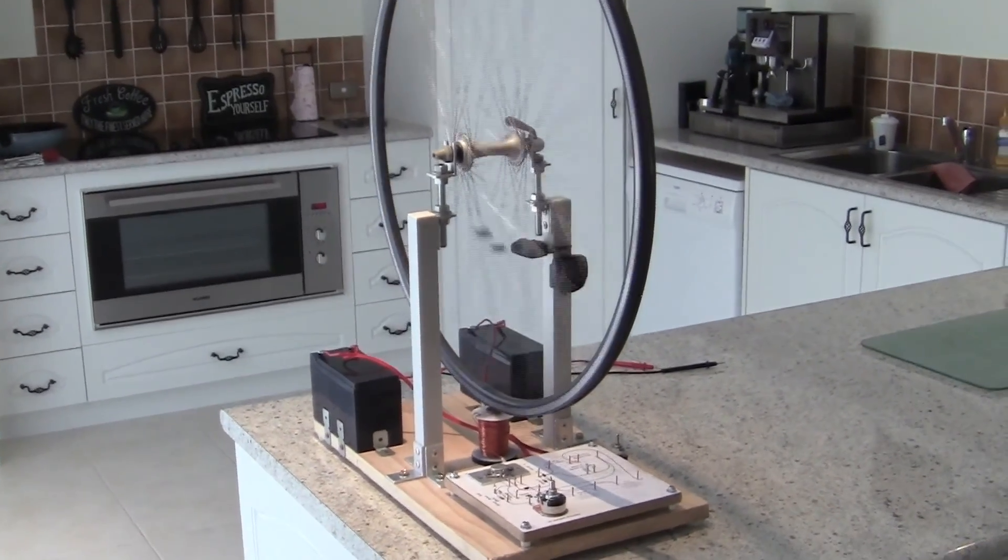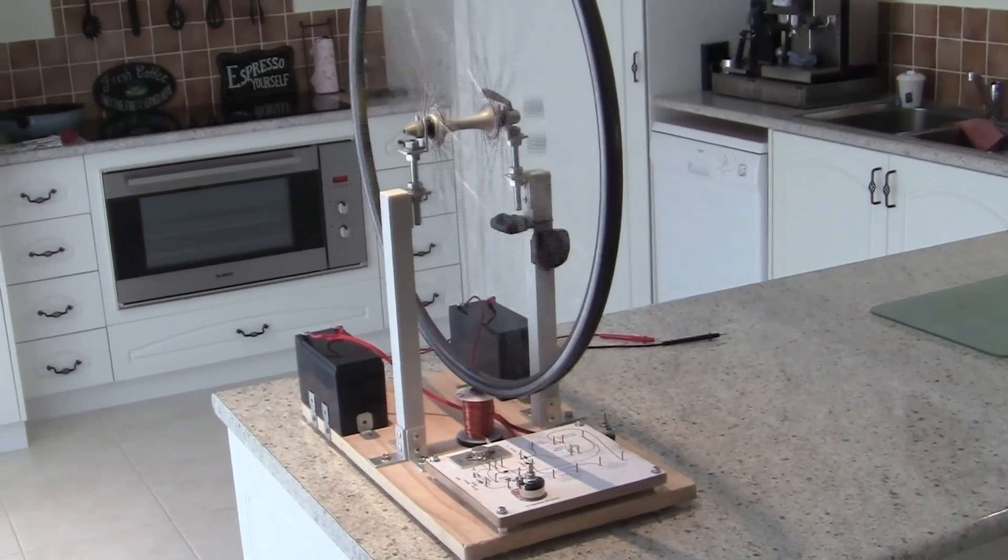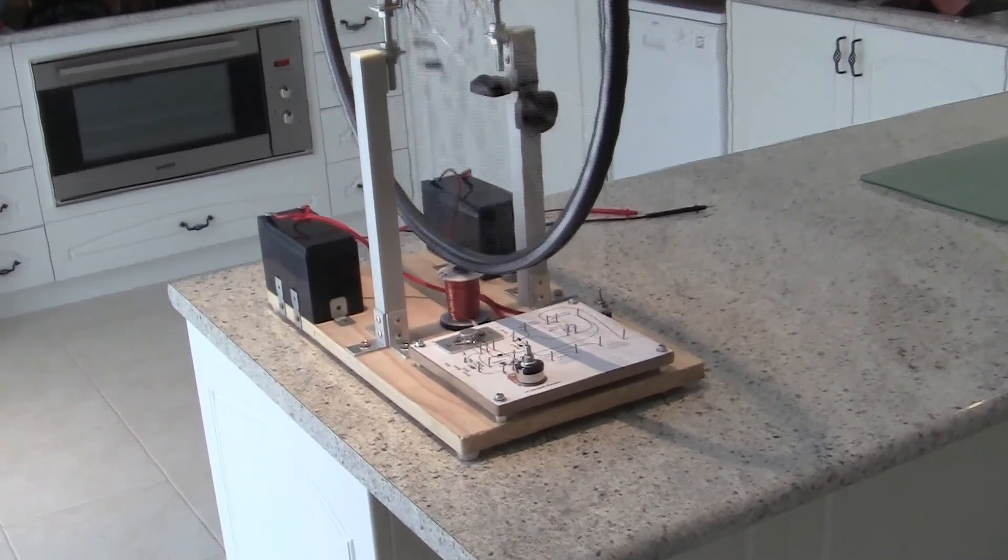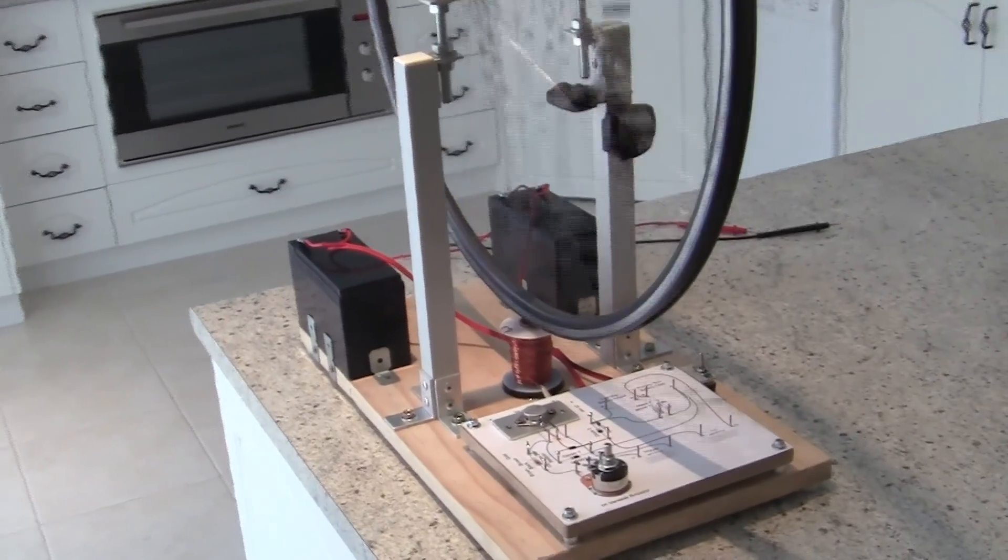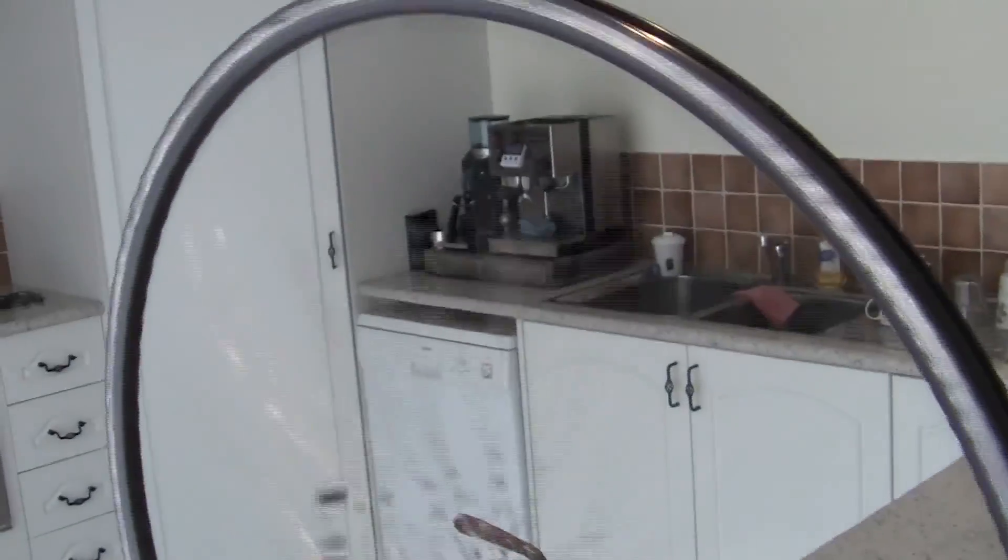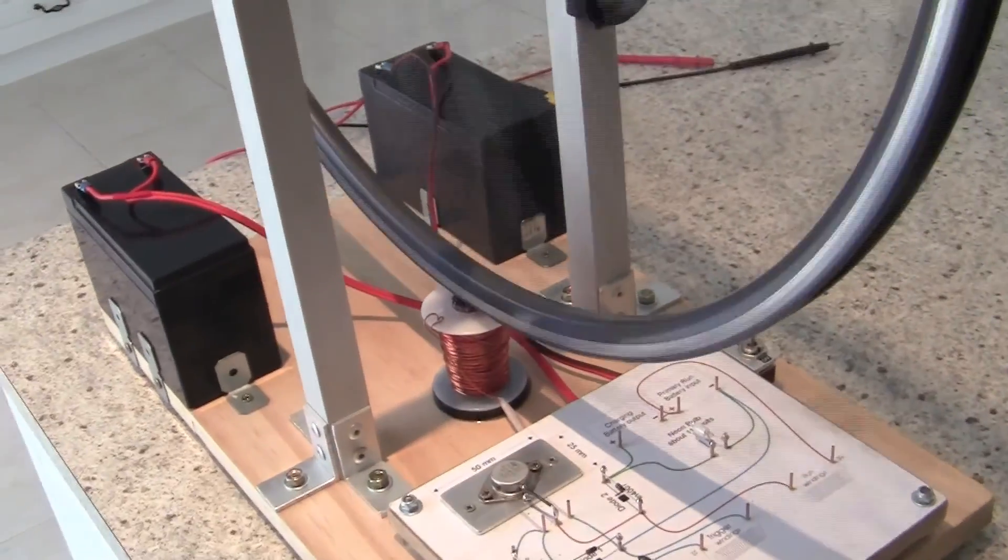So it's obviously charging by the collapsing magnetic field which is round about 400 volts per magnet and there's 16 magnets on the wheel. And it's running a mechanical device and running a circuit and charging the battery to full capacity. It'll get it up to about 12.85 and that'll be fully charged.